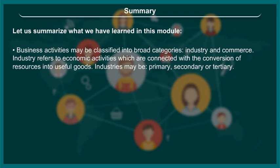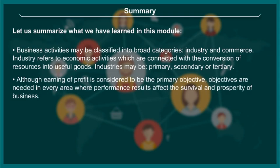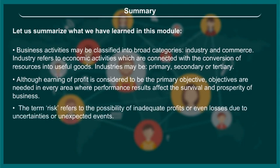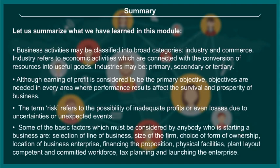Business activities may be classified into broad categories: industry and commerce. Industry refers to economic activities connected with the conversion of resources into useful goods; industries may be primary, secondary or tertiary. Although earning of profit is considered the primary objective, objectives are needed in every area where performance and results affect the survival and prosperity of business. The term risk refers to the possibility of inadequate profits or even losses due to uncertainties or unexpected events.